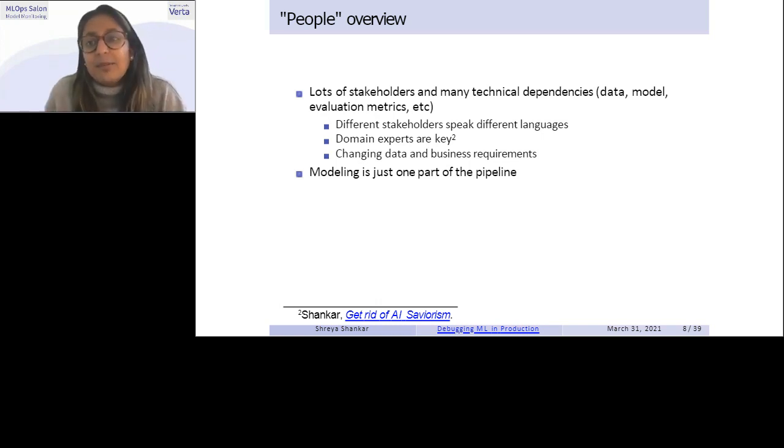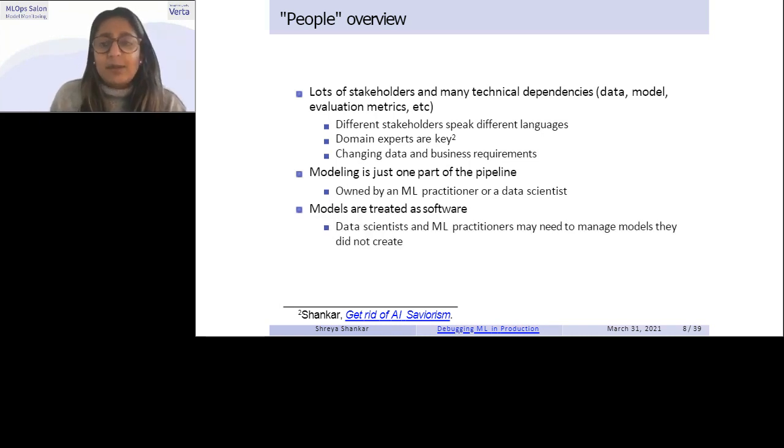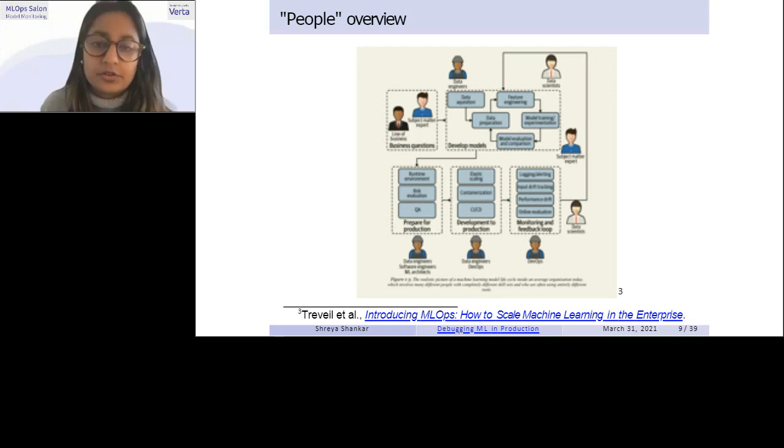For example, maybe a client might want to optimize for precision today and then recall tomorrow. So kind of how do you figure out what's that problem? And those are two completely different pipelines if you were to solve precision and recall. So how do you align on that and move forward? And also modeling is just one part of the pipeline. I think a lot of people are now talking about this, which is great. But what happens when modeling is just one part of the pipeline? Usually it's owned by some sort of data scientist or ML practitioner. But the models are treated as software, which makes things pretty hard. Because what happens when you onboard somebody new onto your ML pipeline, if you've ever done ML modeling or research, it can be super hard to kind of onboard somebody new onto like your conglomeration or like your ensemble of models. Because, I mean, that's just hard. It's hard in a way that software isn't.